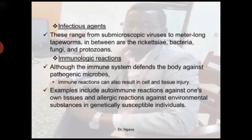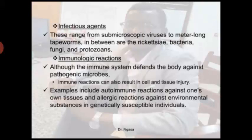Infectious agents are another group of causes of cell injury. These include many organisms: viruses, bacteria, rickettsiae, tapeworms, fungi, and protozoans. Immunological reactions are also a cause: although the immune system defends the body against pathogenic microbes, immune reactions can cause cell injury and disease. Examples include autoimmune reactions against one's own tissues and allergic reactions against environmental substances in genetically susceptible individuals.